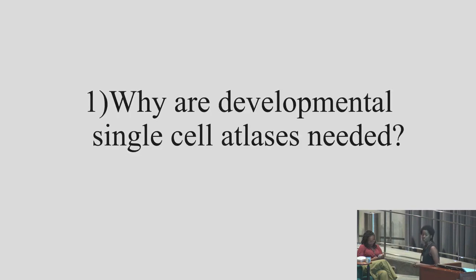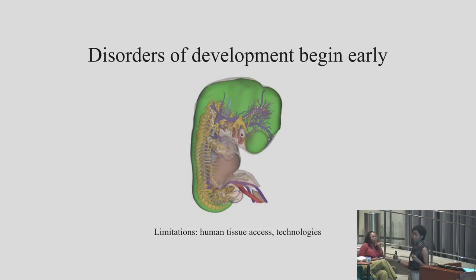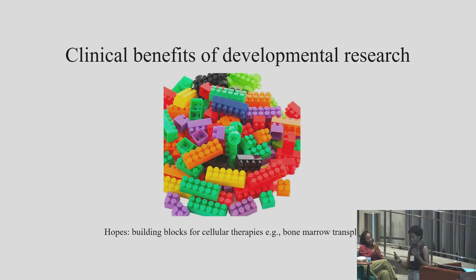Why are these developmental single-cell atlases needed? Disorders of development begin early, and understanding the cellular dynamics that lead to embryogenesis in health and disease is really important. There have been limitations due to issues with human tissue access and technologies like bulk transcriptomics that obscure the contributions of particular cell state populations — you can't pinpoint which cell state led to a dysregulation event. The blue sky goal would be completely understanding the recipe for how to create any particular cell type lineage, giving us building blocks for cellular therapies with massive clinical benefits.